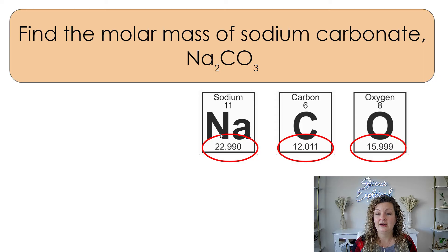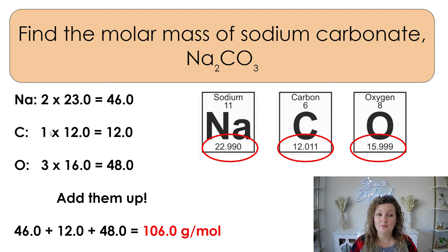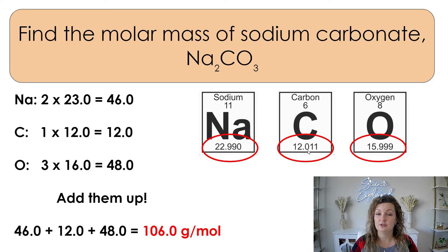So you can see we have Na and we have two of these. If you look on the periodic table, it is 22.99, so we're going to round that to 23. Two times 23, and that two came from the subscript you see. Now for carbon, we have one — that's an understood one — so one times 12. And then we have three oxygen, so three times 16, rounding to 16.